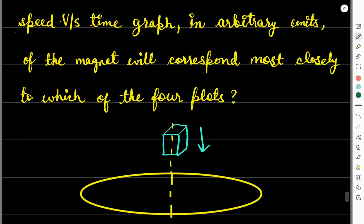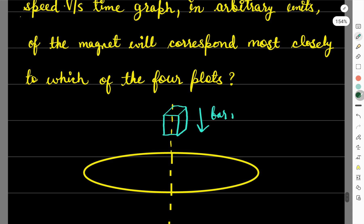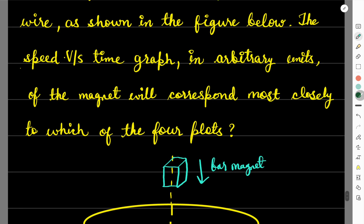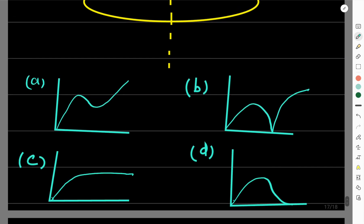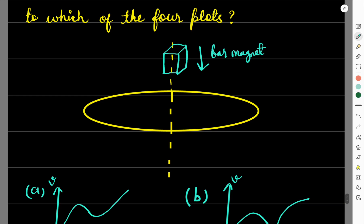This is an induced EMF question, and a very interesting concept. Many questions are asked from this in exams, and it's also an important topic for interviews. Now we have a horizontal ring of conducting wire, and the figure is shown here. There is a bar magnet that you are passing through a conducting ring. The speed versus time graph you have to tell, in arbitrary units of magnet, will correspond most closely to which of the four plots. Four graphs are given to you, and among these you have to tell one particular graph between speed and time, V and T, what relation will there be between speed and time.